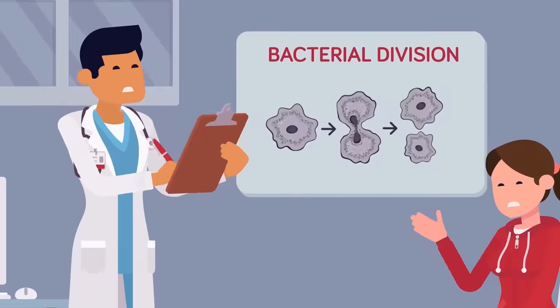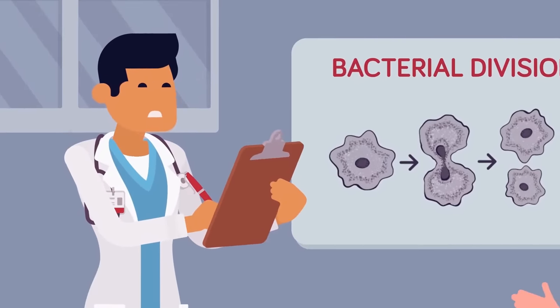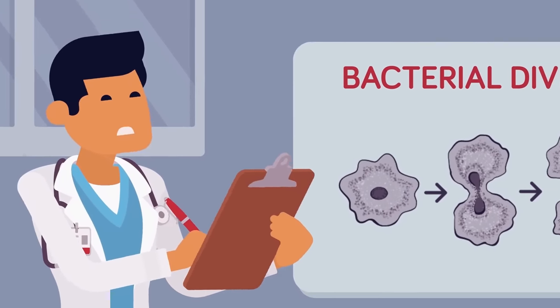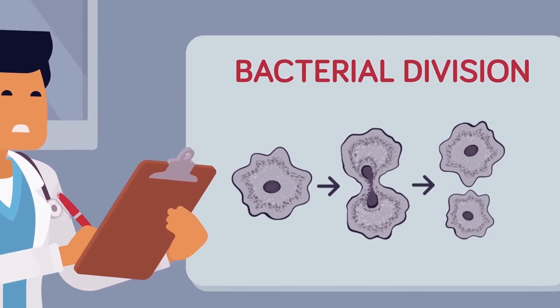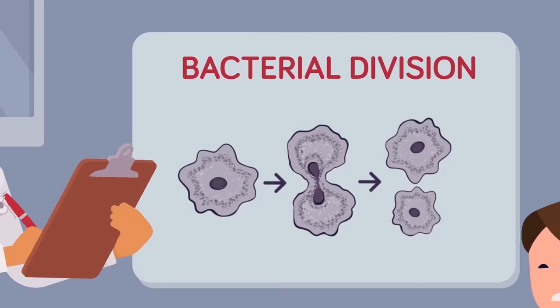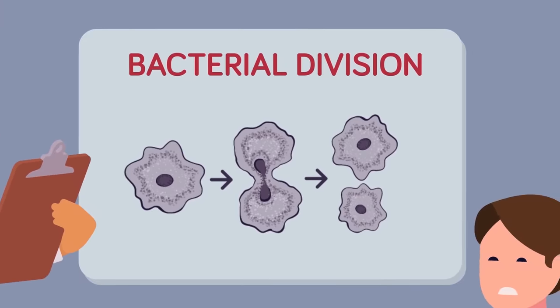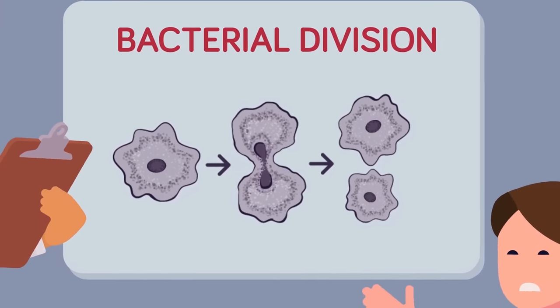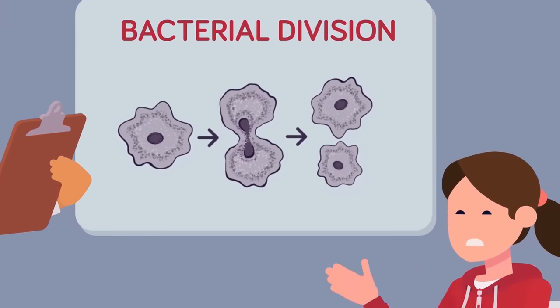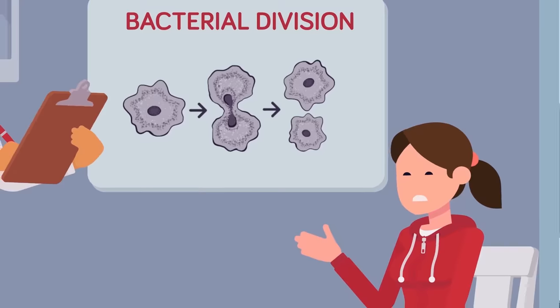If just one of those characteristics is missing, it is not considered a living thing. Bacteria meet all of the requirements. They are made of a single cell that divides to reproduce, and maintains homeostasis as their environment changes.